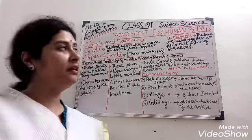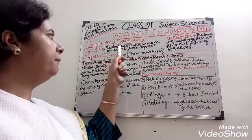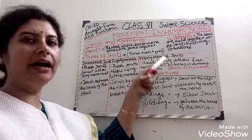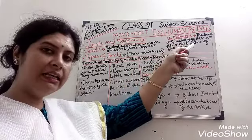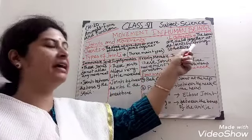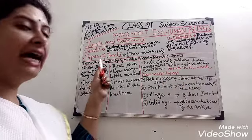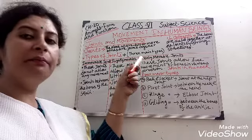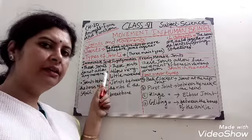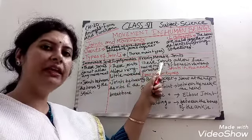Our next topic is joints and movements. The place where two or more bones are joined together is called a joint. The bones are held together at the joints by a strong structure called ligaments. There are three main types of joints: immovable joints, slightly movable joints, and freely movable joints.